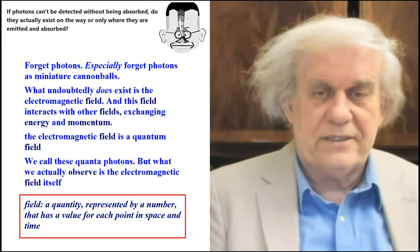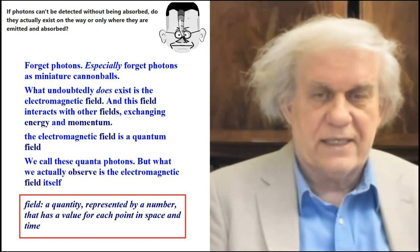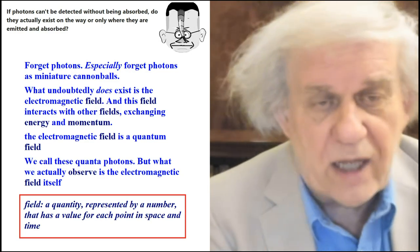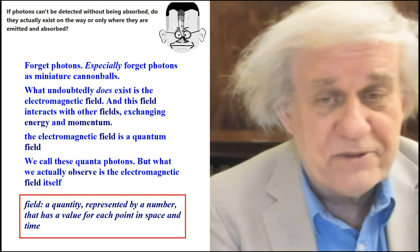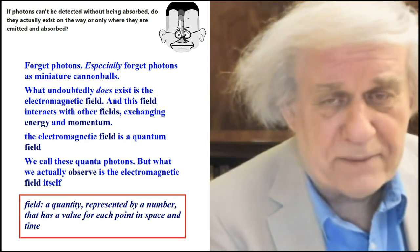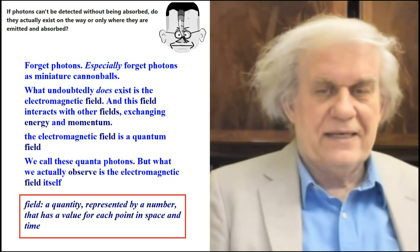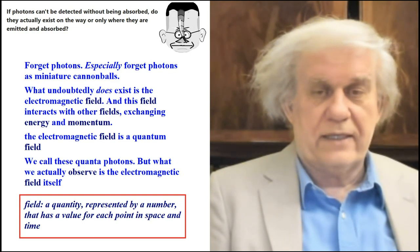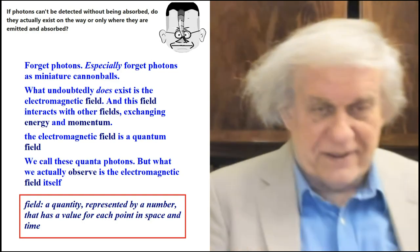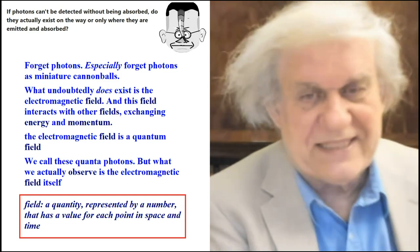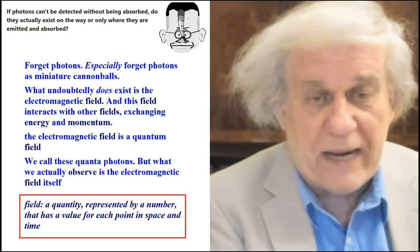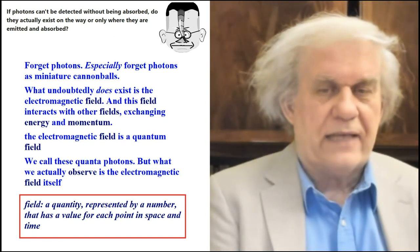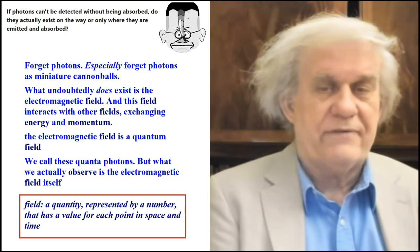Is there an object called energy? Please draw it. I want to see it. The electromagnetic field is a quantum field. We call these quantum photons. But what we actually observe is the electromagnetic field itself. I do envy his great vision. He is able to see fields. I haven't. A field, another rabbit hole, a quantity, a number represented by a number that has a value for each point in space and time.